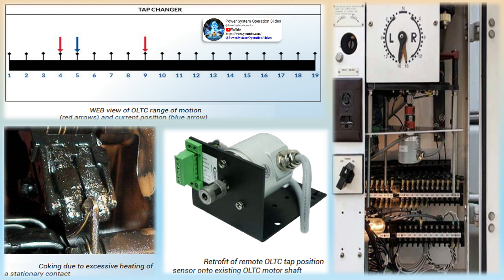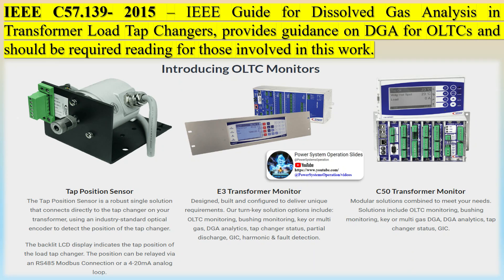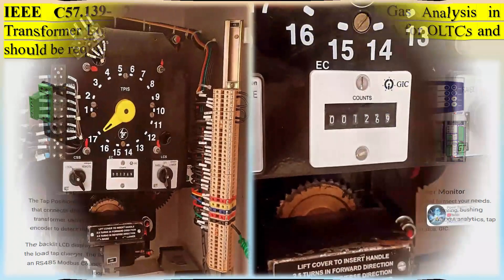Optimizing tap settings based on load conditions minimizes energy losses in the system, translating to lower operational costs and a more sustainable energy infrastructure. Maintaining consistent voltage levels with OLTC transformers prevents over-voltage or under-voltage scenarios, safeguarding connected equipment from damage and extending its operational lifespan. OLTC transformers also contribute to grid stability by stabilizing voltage fluctuations caused by load changes or grid disturbances, helping maintain system integrity and preventing cascading failures.